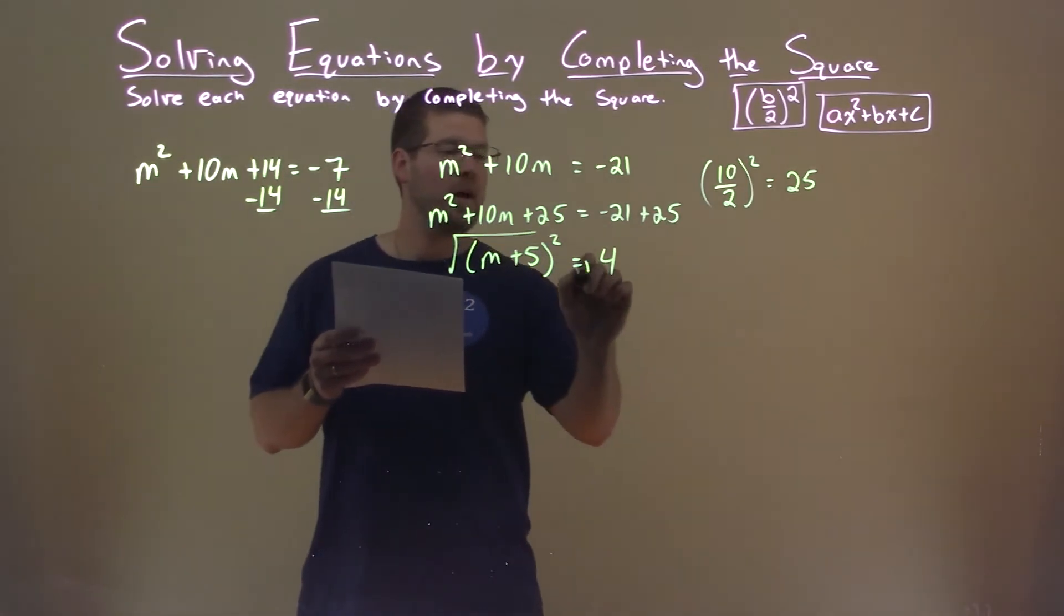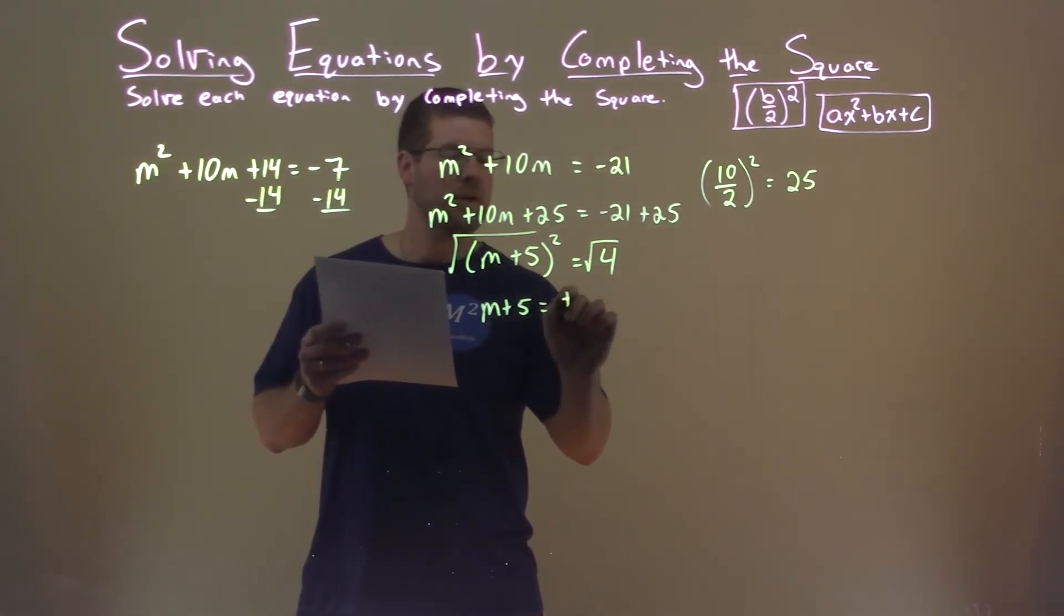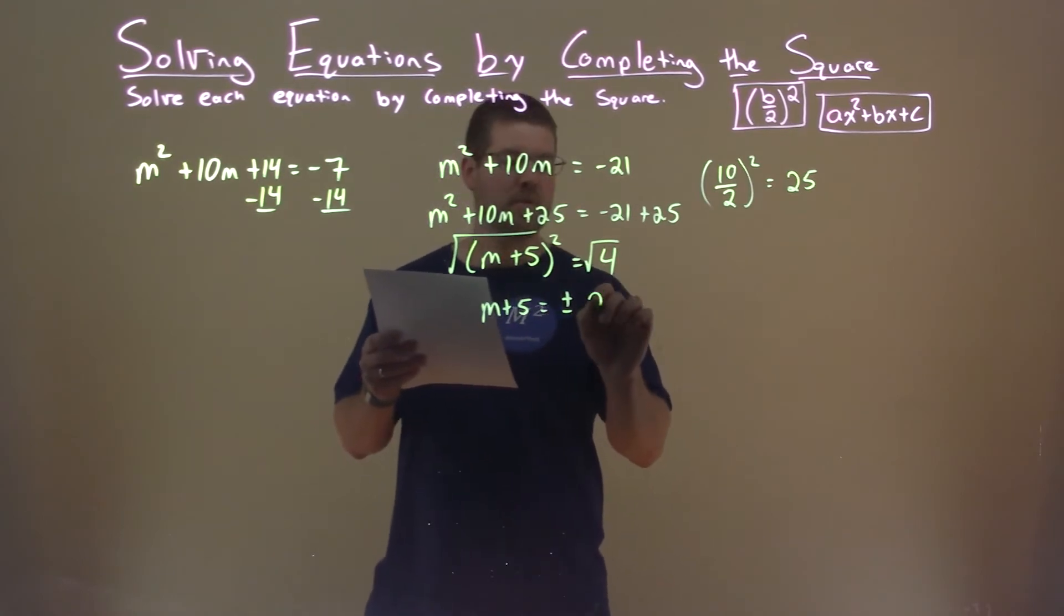We square root both sides. We have m plus 5 equals plus or minus the square root of 4, which is 2.